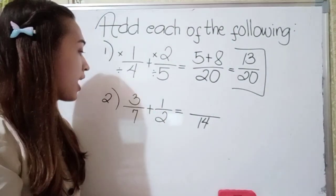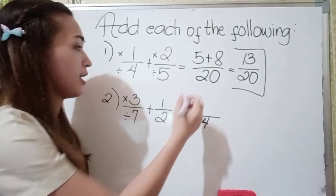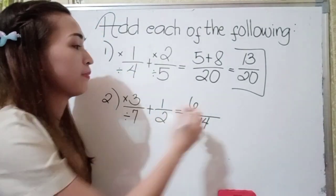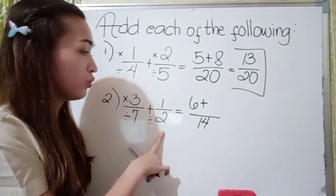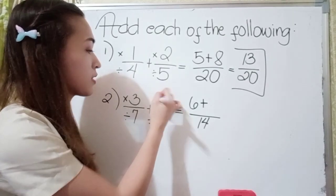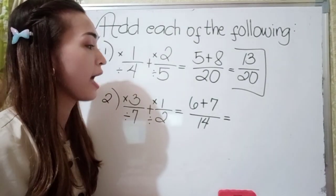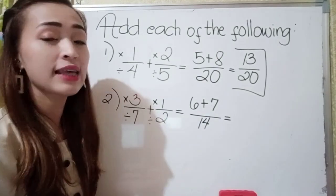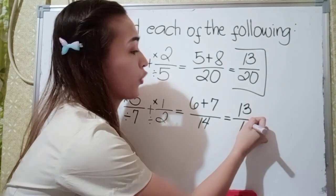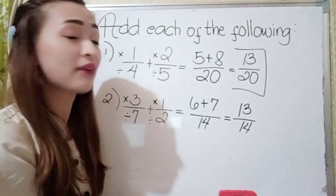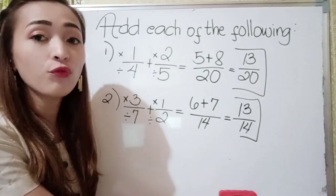14 divided by seven is two, and two times three is six. Then, 14 divided by two is seven, and seven times one is seven. Since we have addition, let's get the sum of six and seven: six plus seven is 13, giving us 13 over 14. Since we cannot simplify 13 over 14, the final answer in number two is 13 over 14.